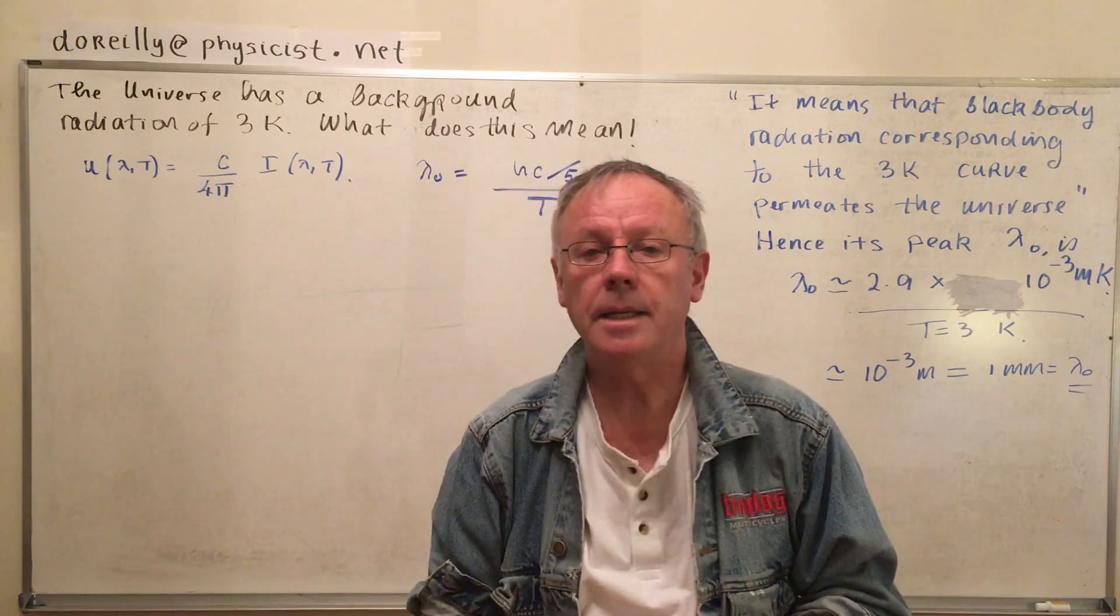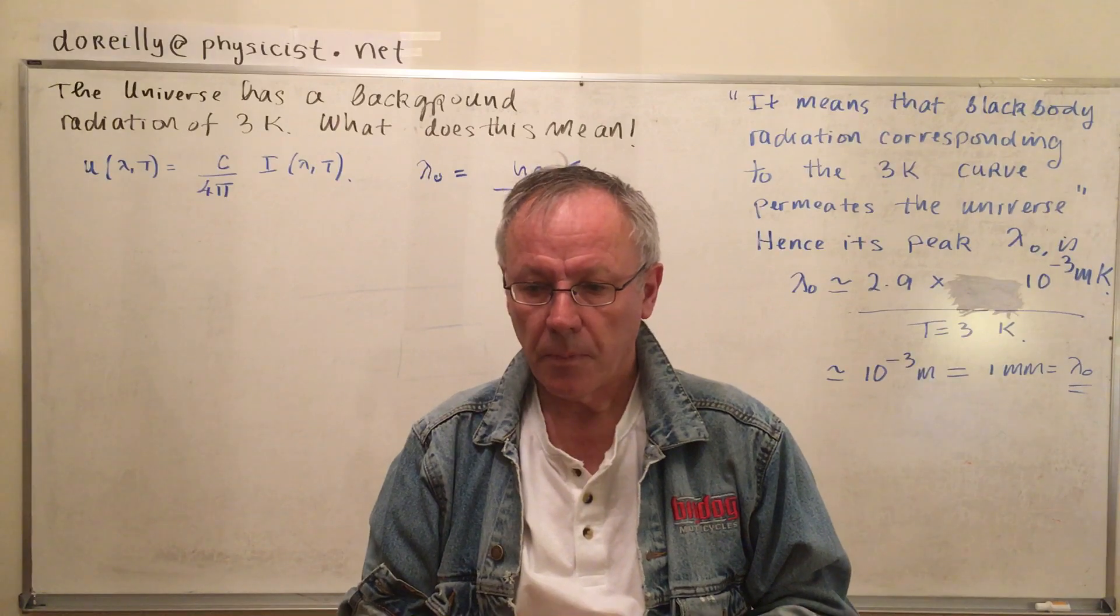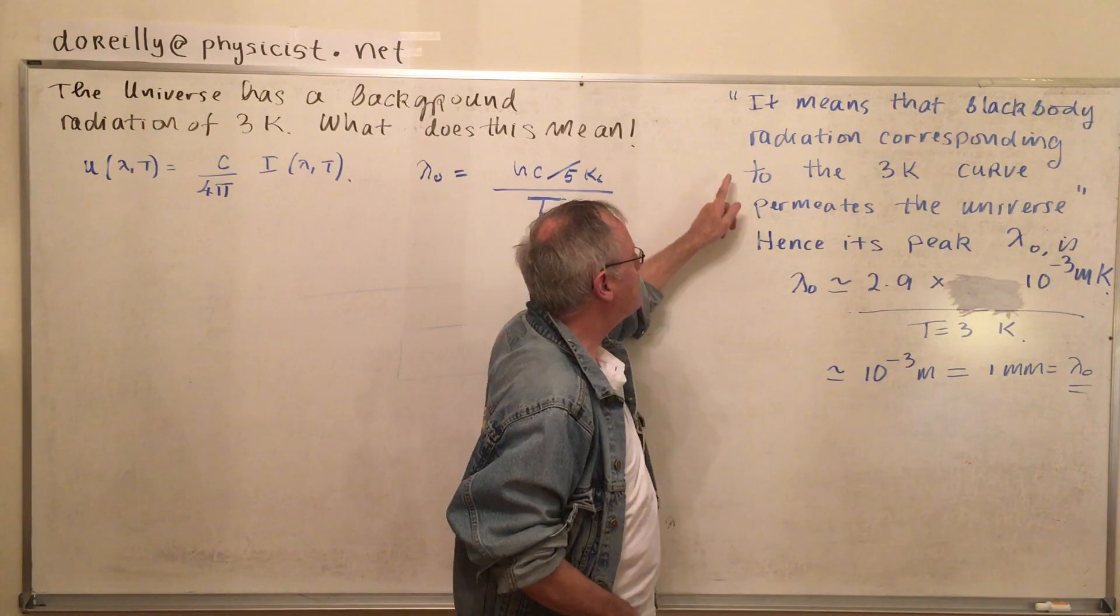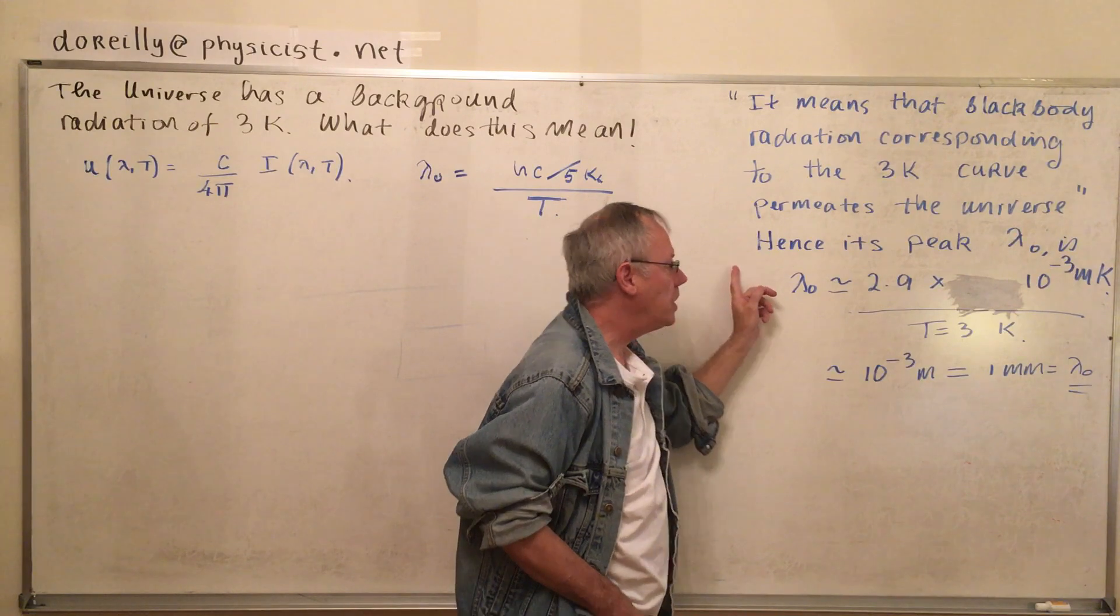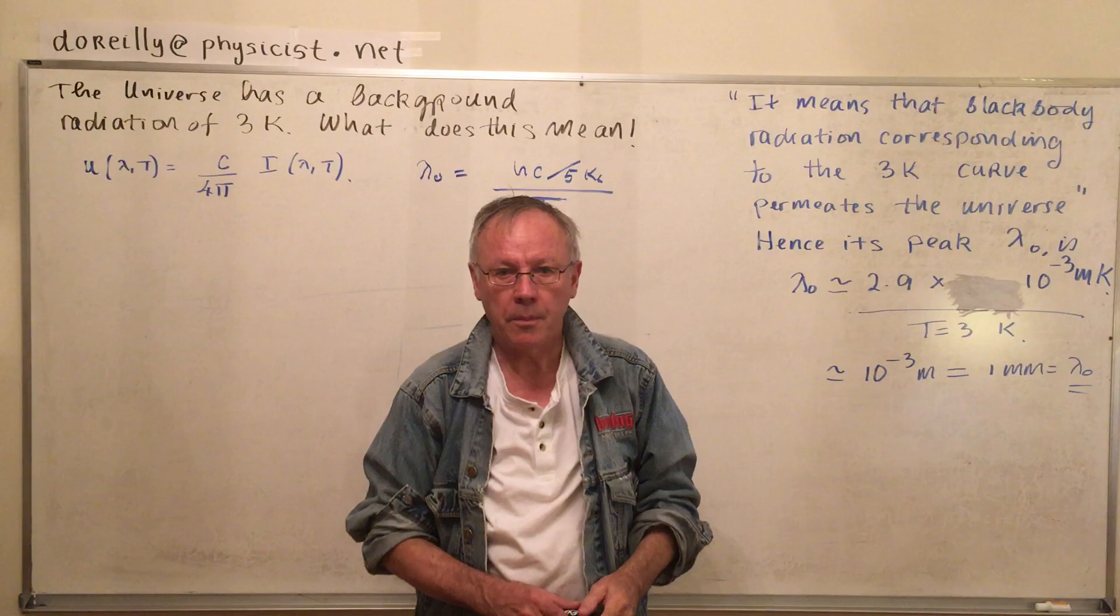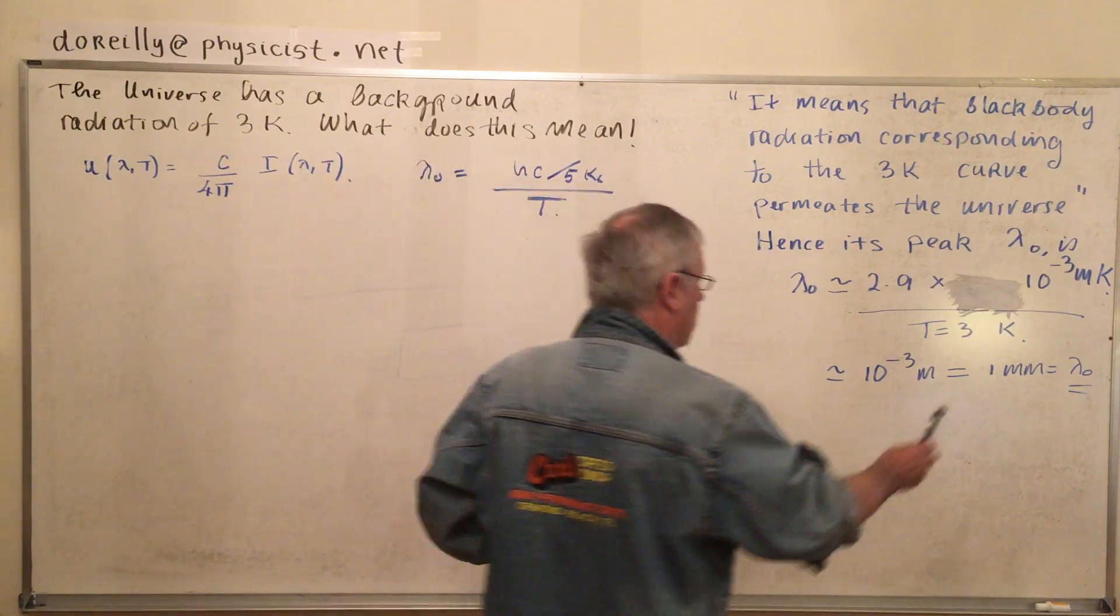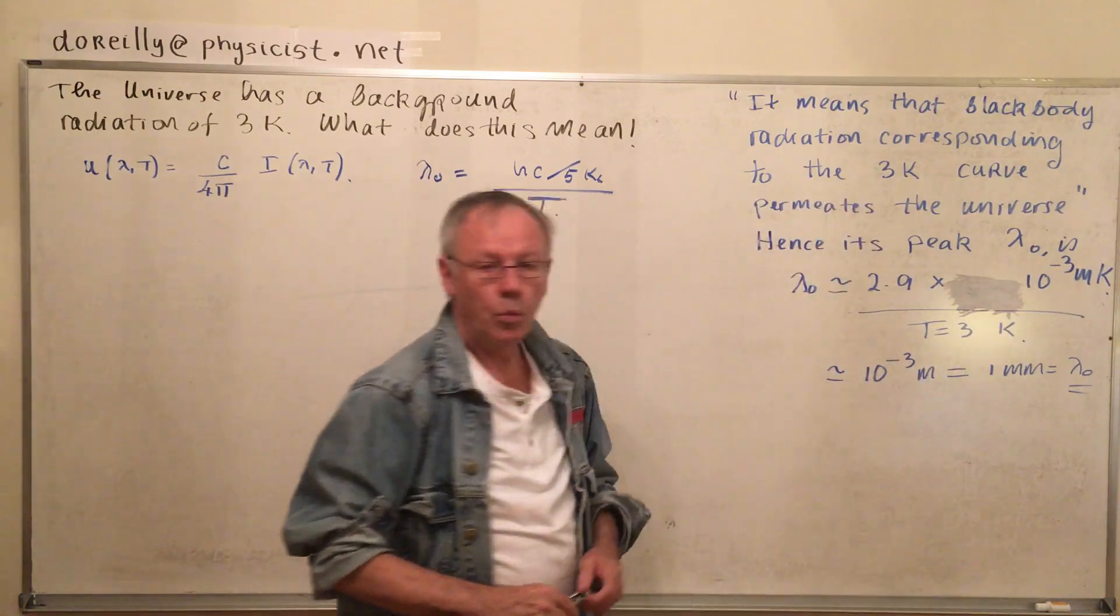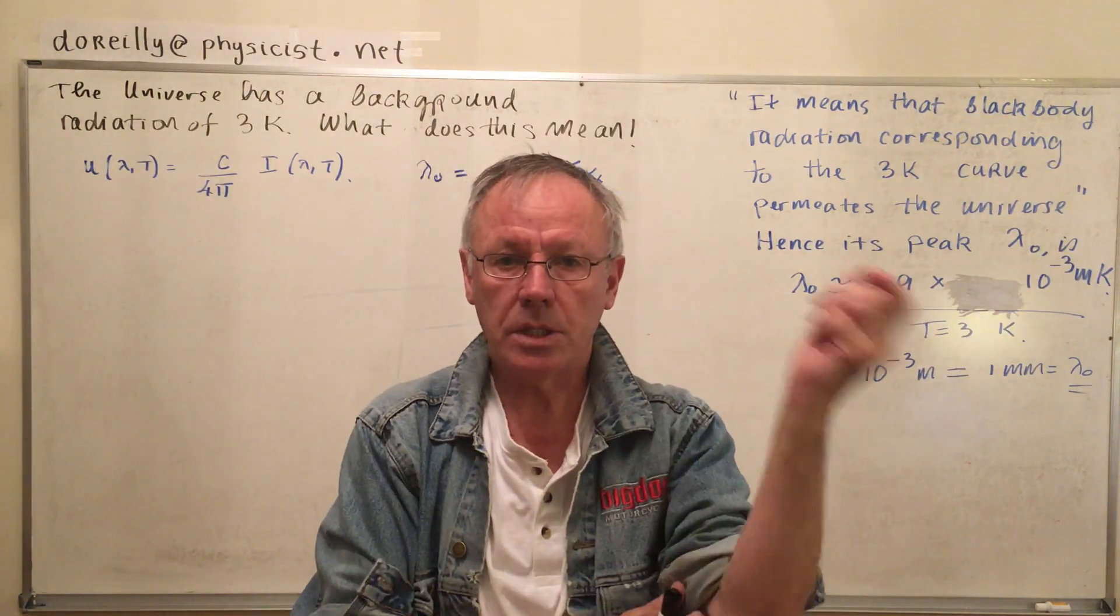Well I'll give you an answer first in a sentence. It means that black body radiation corresponding to the 3K curve permeates the universe. Hence, its peak radiation, lambda zero, is given by 2.9 by 10 to the power of minus 3 meters Kelvin over 3K Kelvin, which is about 1 millimeter. So that's the radiation wavelength at its peak.